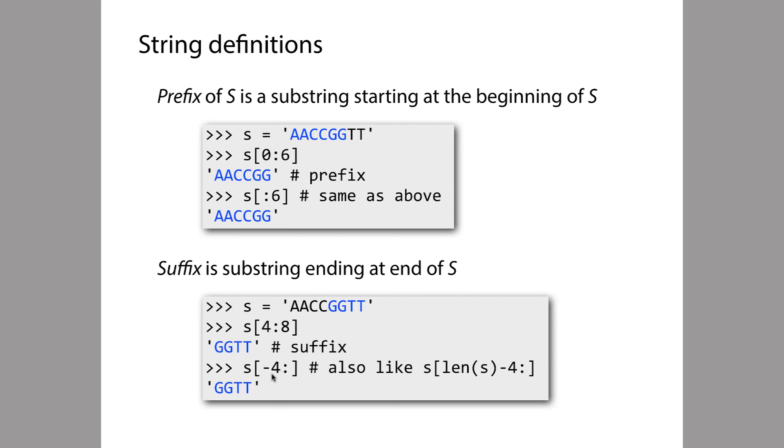This is another way of saying the same thing. We put negative 4 colon and then omit what comes after the colon. That's another way of saying we want to start four positions to the left of the end of the string and then go to the end of the string. It's another way of saying what we set up here.